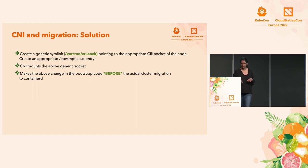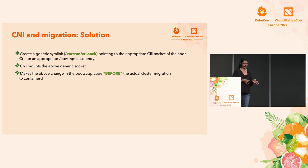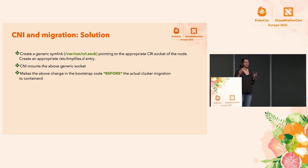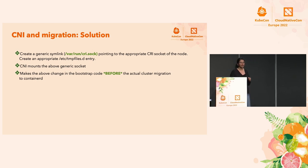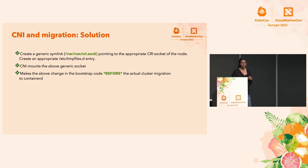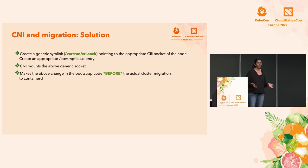We solved this by creating a generic symlink in our bootstrap code — whether it was a ContainerD socket or a Docker socket. If a node came up with Docker daemon, the generic cri.sock would point to the Docker socket. If it came up with ContainerD, it would point to containerd.sock. The cri.sock was mounted into our CNI pod spec. We made sure these changes got into a release prior to the actual migration, because you have to prepare your CNI code to handle this before the migration.